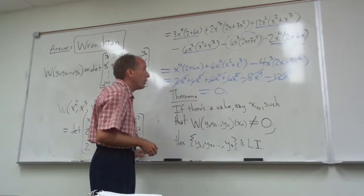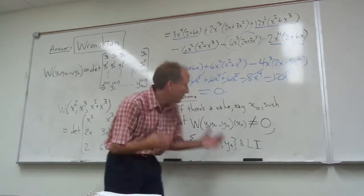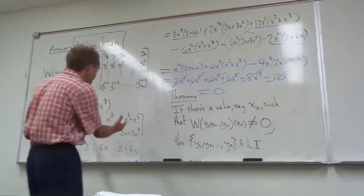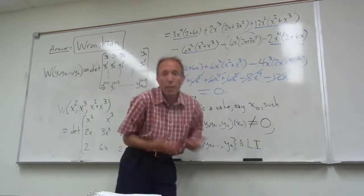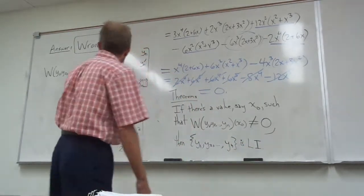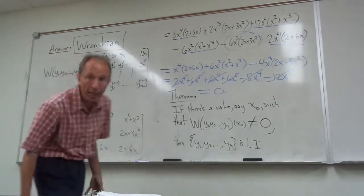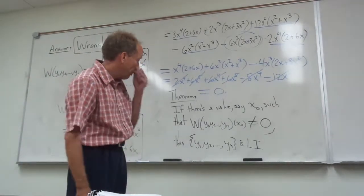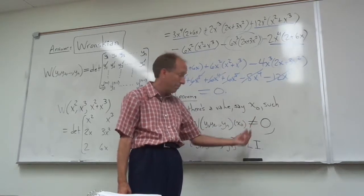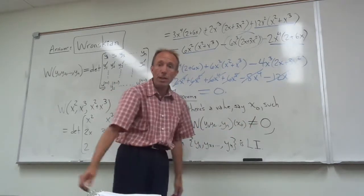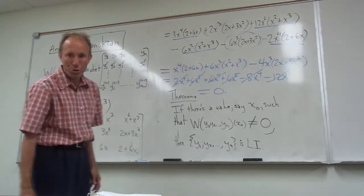So in this case, there is no x naught that I can plug in to my Wronskian that will give me a non-zero value. Well, that's what we expected because these functions are not LI. If we could have plugged in a number and gotten a non-zero answer, then the vectors would have been LI, but looking at these functions, we know that that's not true.